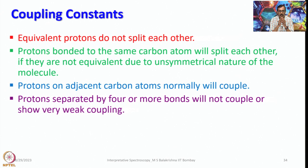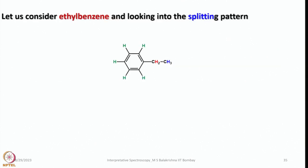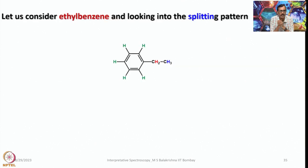As long as they are fewer bonds apart — that means 1, 2, 3, or to an extent 4 — they can show coupling. But if they are beyond that, they may or may not show any coupling. Even if they show coupling at 5 or 6 bonds, it is very weak. Let us consider the example of ethyl benzene and look into the splitting pattern.